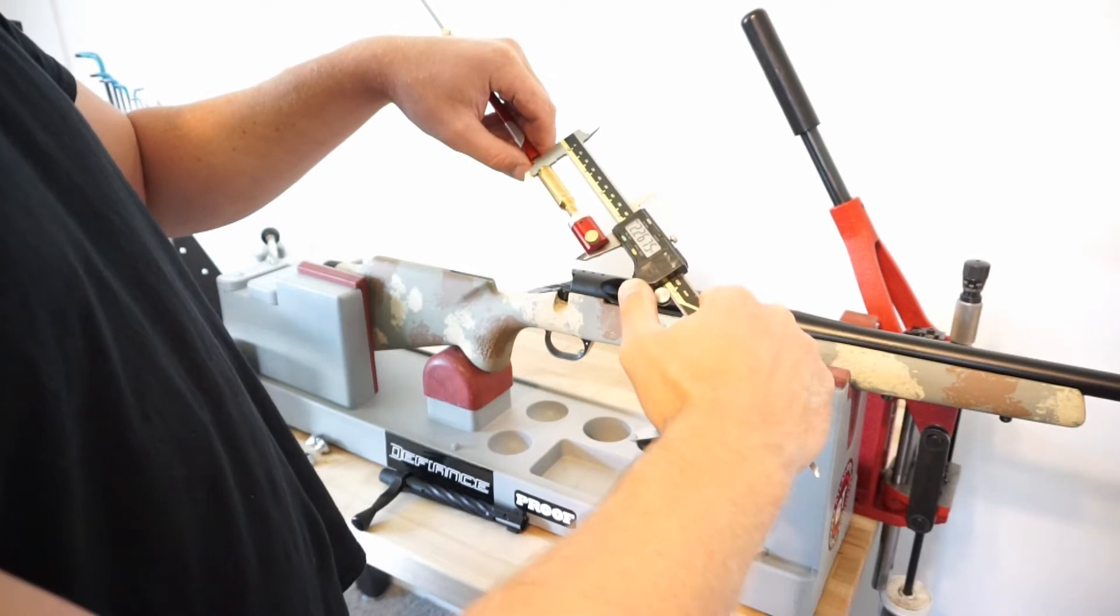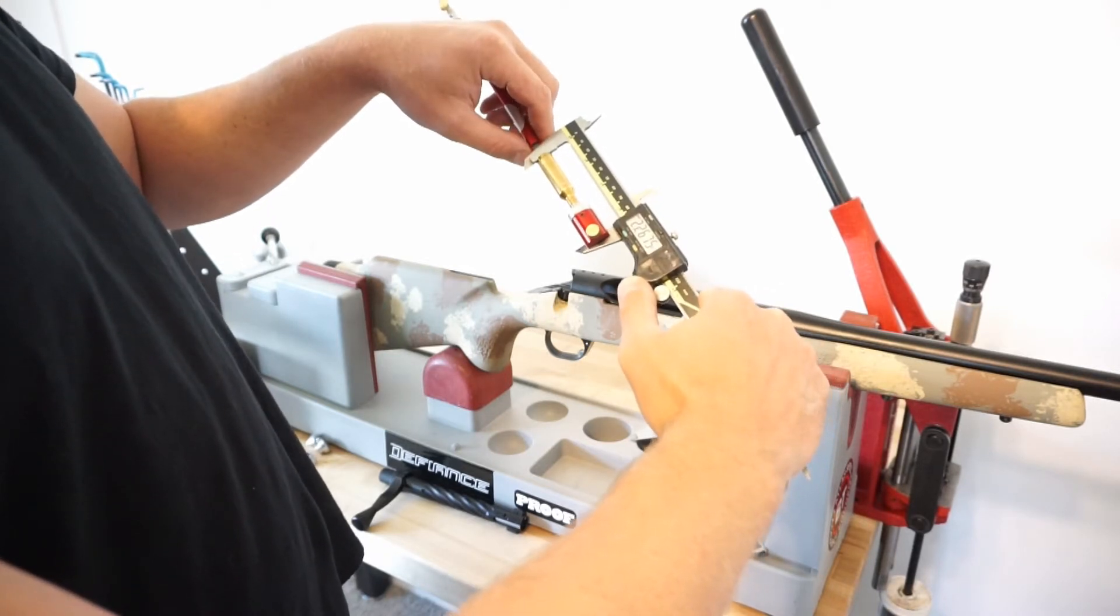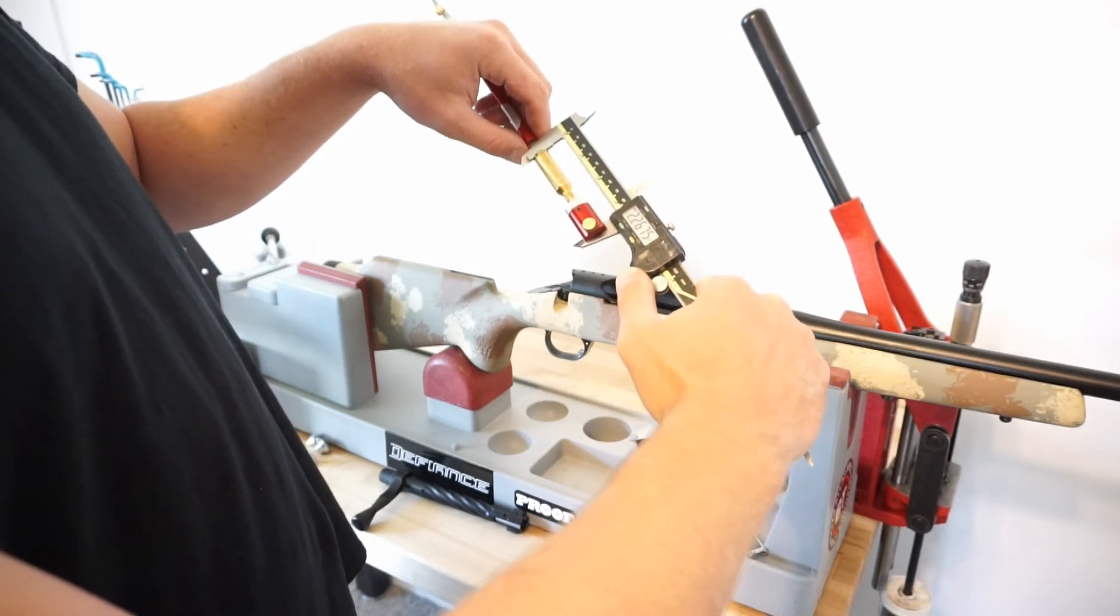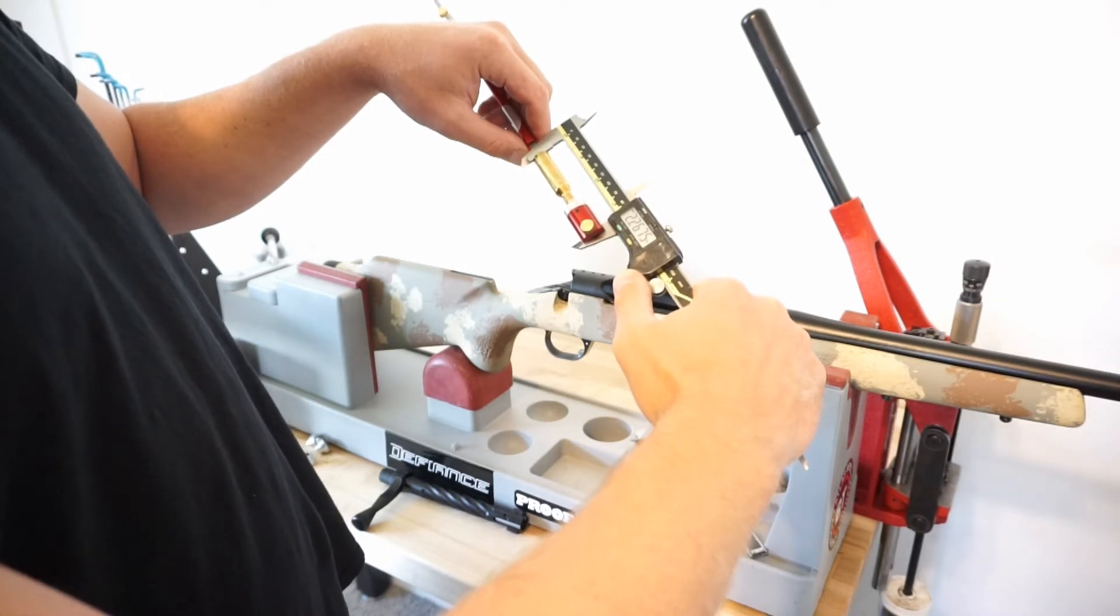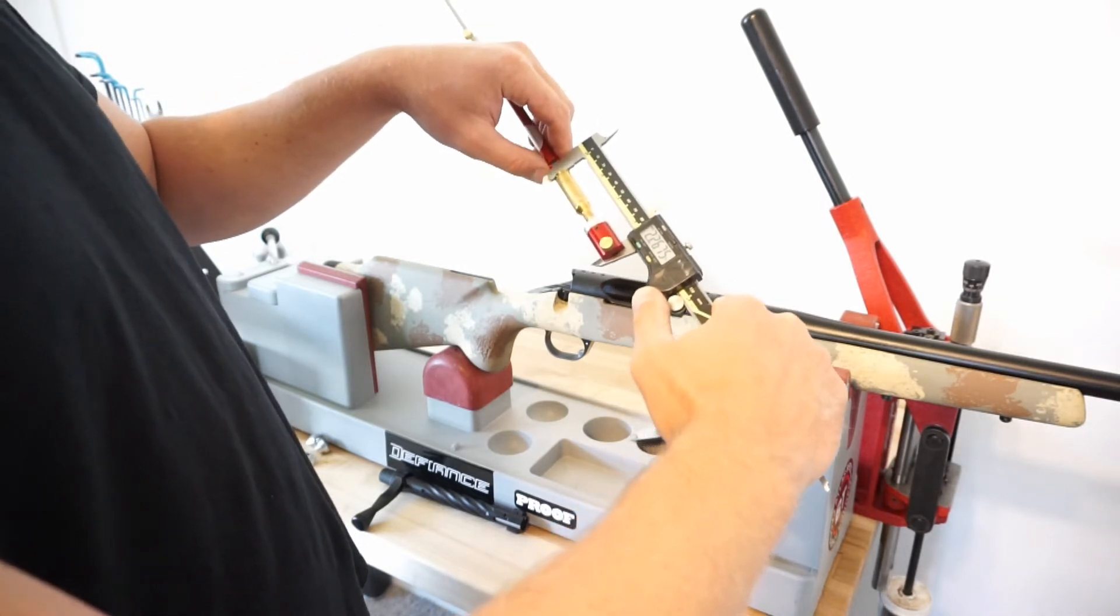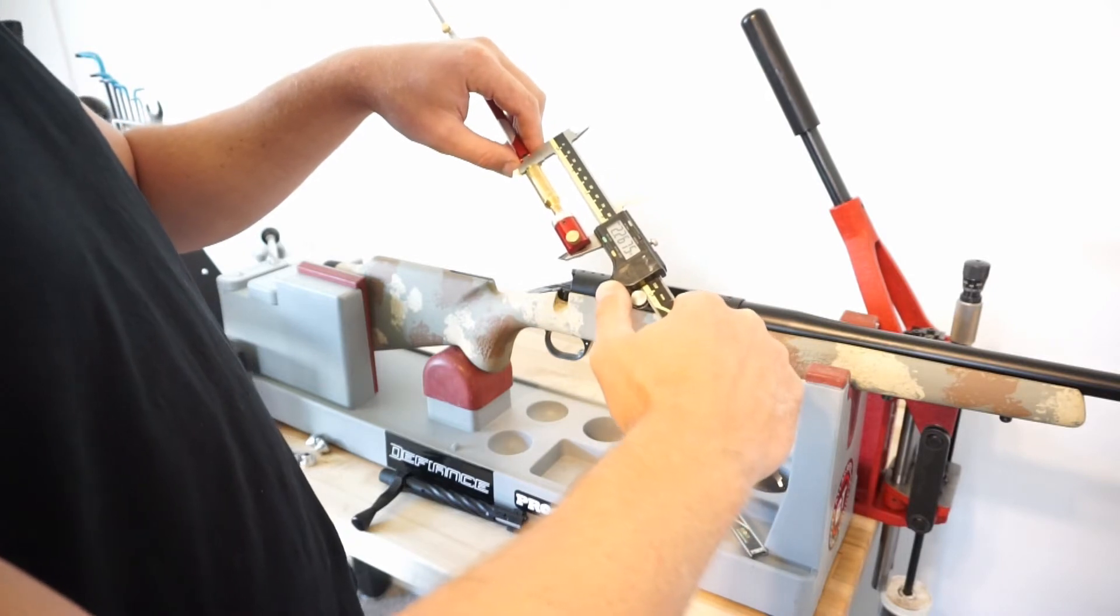And I am coming within a half a thousandths plus or minus every time. So I know that's a good, good length to go off of. So the ogive is measuring at 2.267 right now. And I've had it up to 6.8. So I'm plus or minus a half a thousandths. That's a really good measurement.